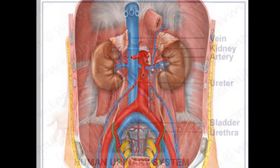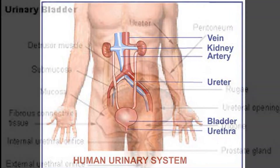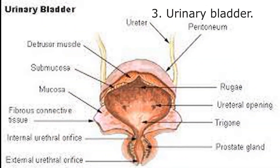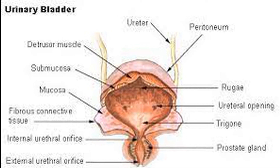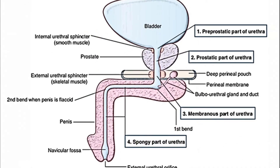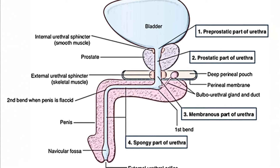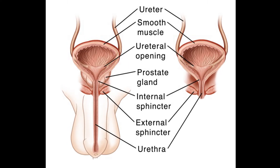Ureters: A narrow tube called the ureter runs from the inner side of each kidney up to the urinary bladder. Urinary bladder: It is a muscular bag situated in the lower abdomen. Urethra: Leading from the urinary bladder is a single median tube called the urethra opening to the outside; it is longer in males and shorter in females.